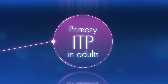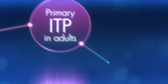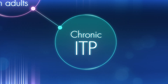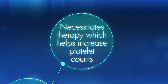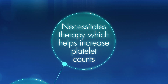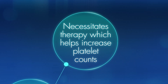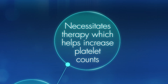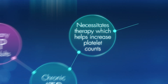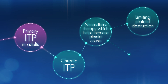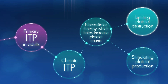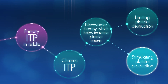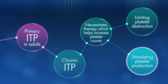Primary ITP in adults usually progresses towards chronic disease that necessitates therapy which helps increase platelet counts to a durable level via strategies such as reducing platelet destruction and increasing platelet counts.